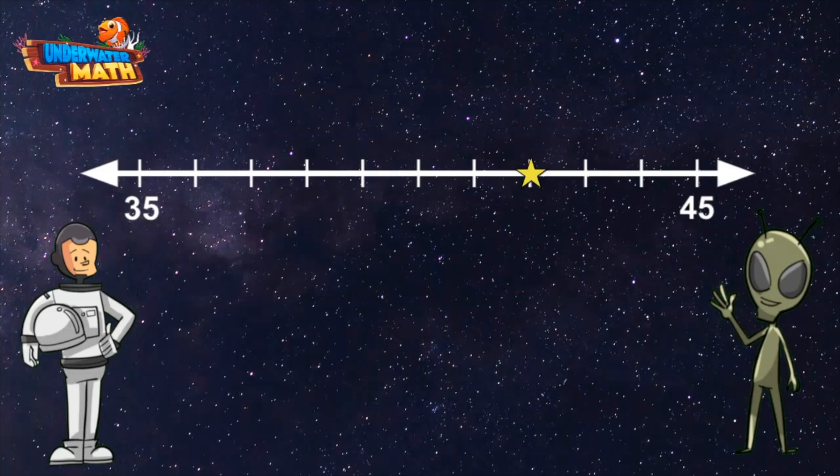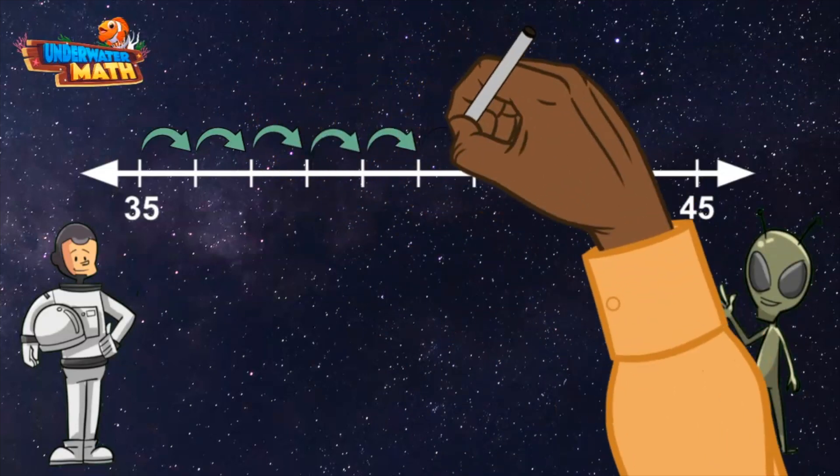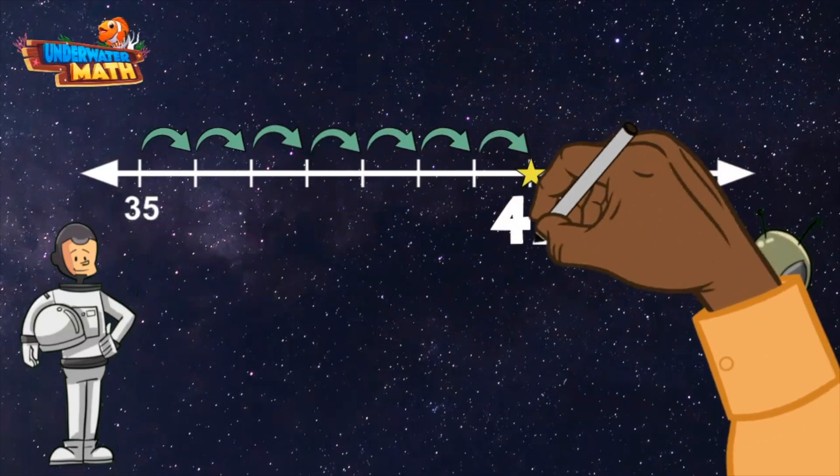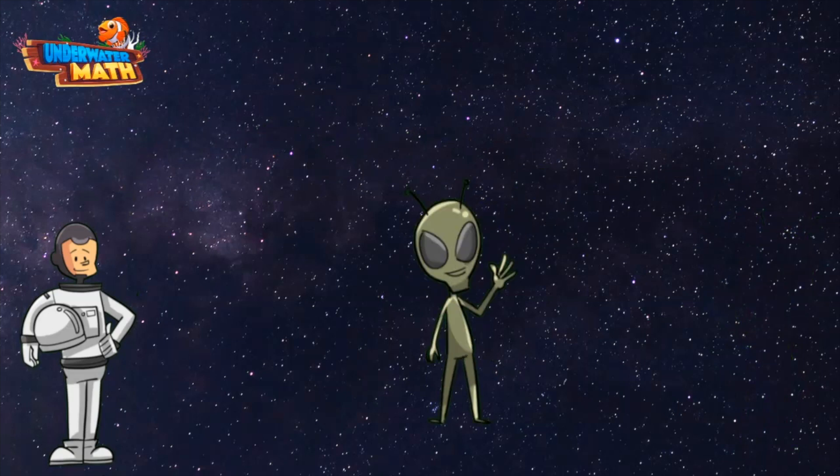between 35 and 45 represents one whole number. Let's start at 35 and count until we reach the star: 36, 37, 38, 39, 40, 41, 42. The star represents the number 42. Let's try another one. Lenny, give us a...